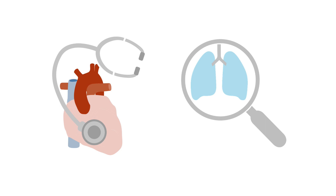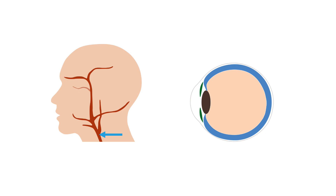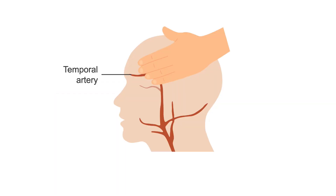Examination of the lungs can give clues about ventilation and uncover underlying infection. Auscultate the carotid arteries and the eyes for bruits. Palpate the temporal arteries for ropiness and to assess the pulse, which may be lost in temporal arteritis.